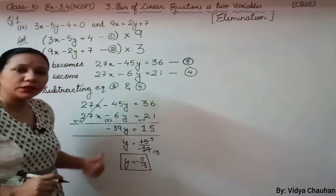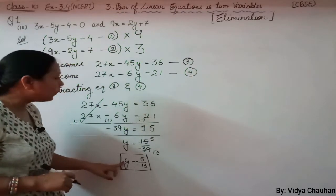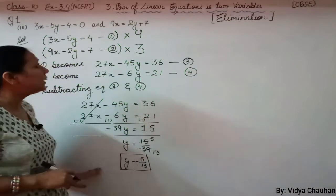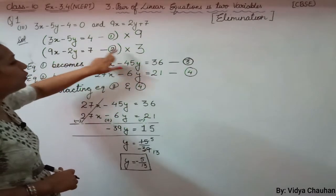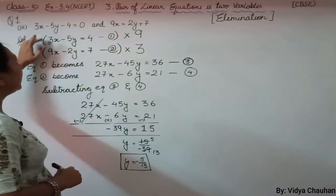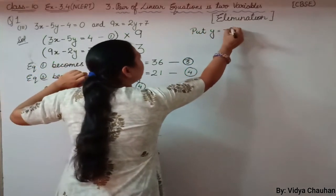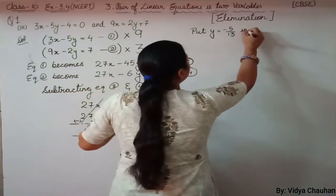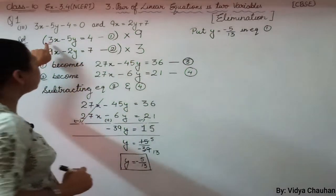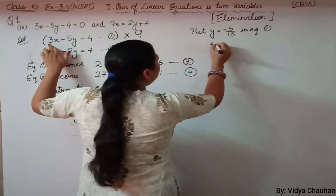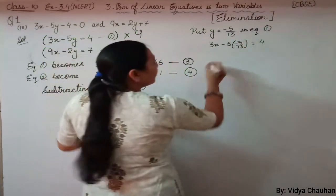Now we need to find the value of x. We substitute the value of y into any of the equations. It is easier to use equation 1 or 2 as they are in a simpler format. So let us put y equals to minus 5 upon 13 into equation number 1. Our equation becomes: 3x minus 5 multiplied by minus 5 upon 13 equals to 4.